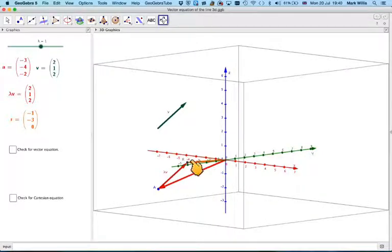This particular point here is a general point on the line. By changing the value of lambda, I will change the length of the vector AR, which is parallel to V, and therefore I'll be able to generate some points.